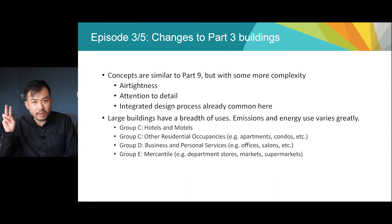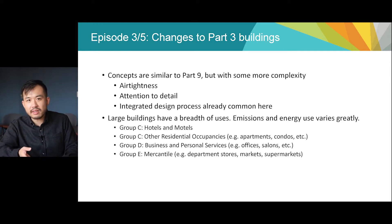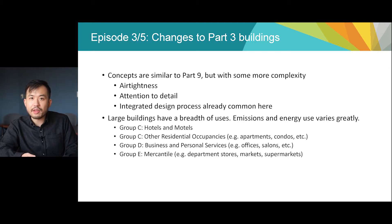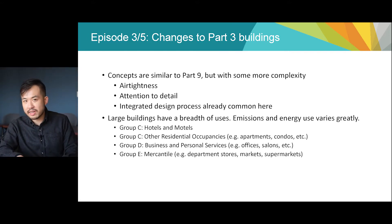For example, the term 'other residential occupancies' typically refers to everything that's not a hotel or motel, which is basically apartments, condominiums, etc. The occupancy classifications listed on this slide — groups C, D, and E — are the ones currently covered by Energy Step Code, and they're the ones that will be most affected by the higher energy efficiency minimums we're proposing. The proposed building carbon pollution standard is also meant for these buildings. This doesn't include all buildings, but they are the most commonly built ones in British Columbia.